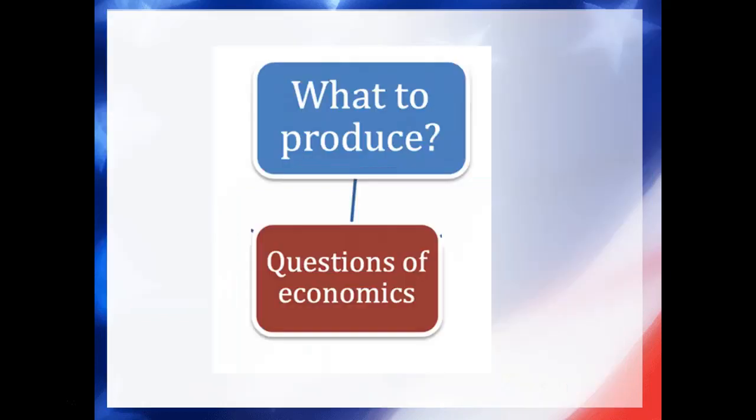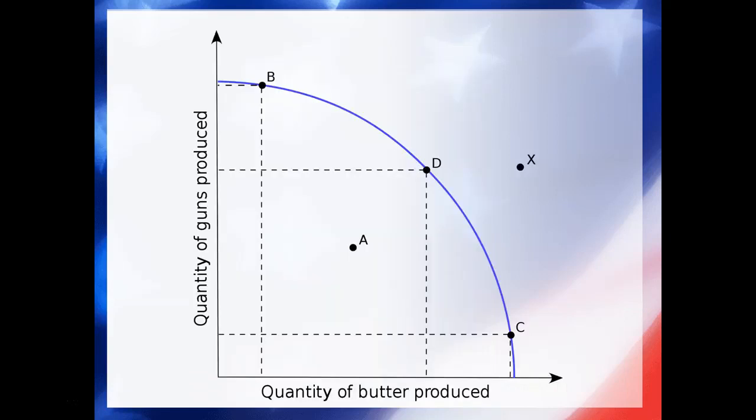In economics, the answer to the 'what' question is partly answered by a concept called the production possibilities curve. This basically means that the output of production throughout the economy reaches its limit at a certain place.